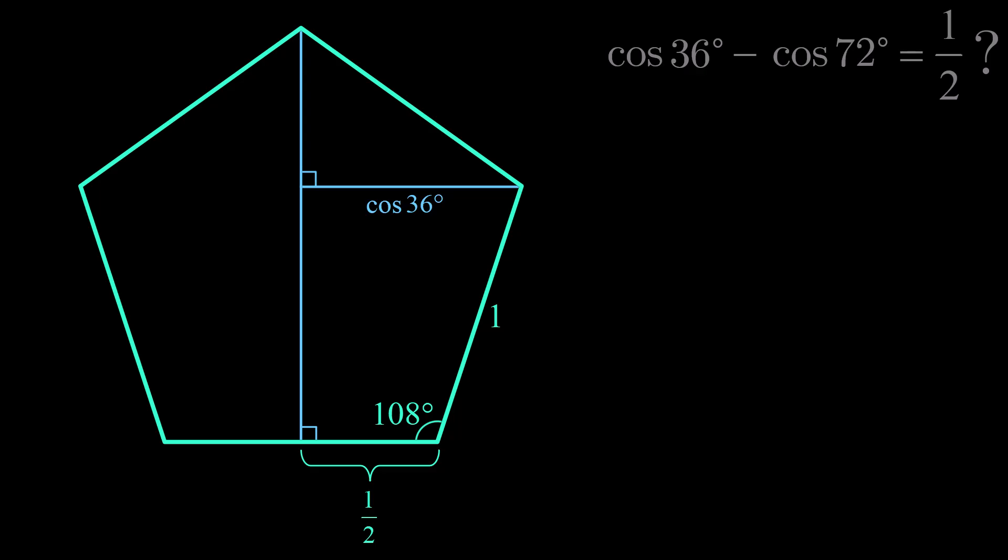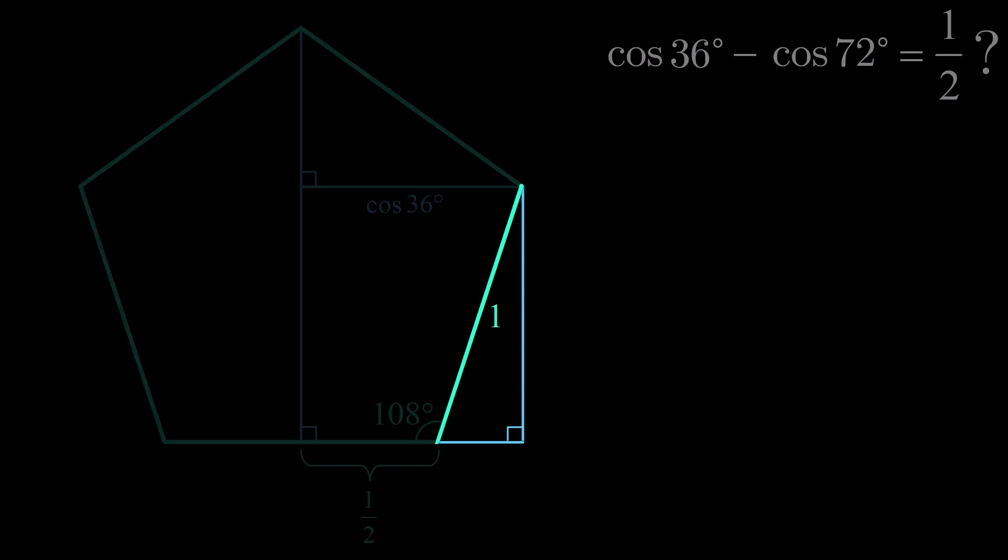From here, let's extend the bottom side of the pentagon to the right, and drop a perpendicular to it from the rightmost vertex, thus creating another right triangle. The acute angle at the bottom of this triangle makes a straight angle with the pentagon's 108 degree interior angle, and is therefore equal to 72 degrees.